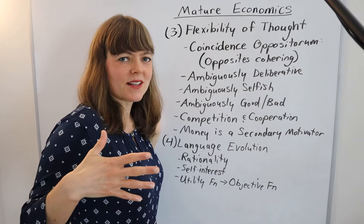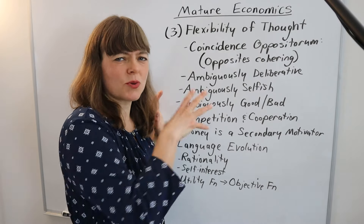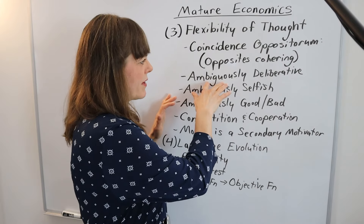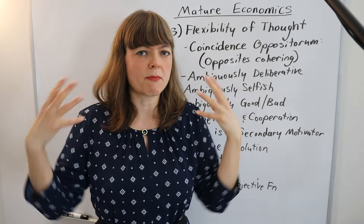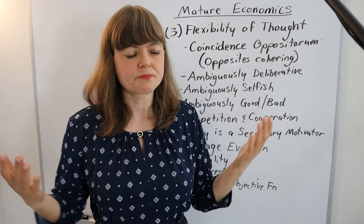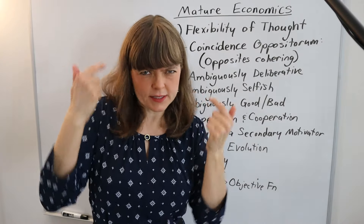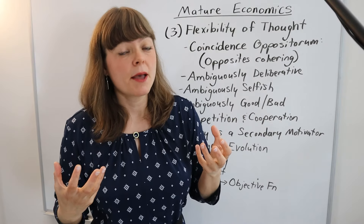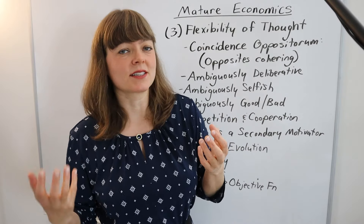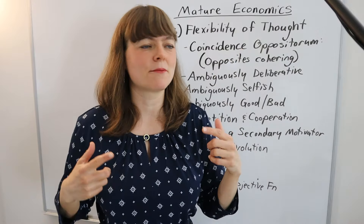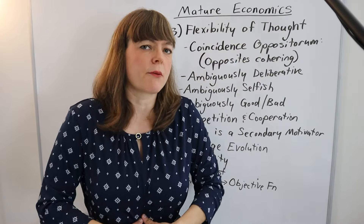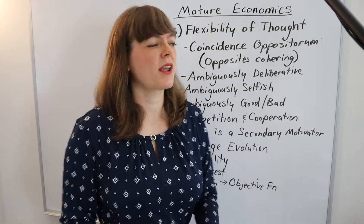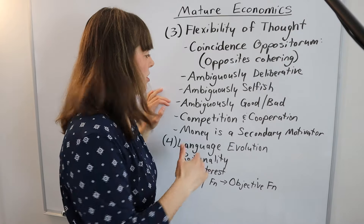Here are some categories I'll do separate videos on in the series. The first is ambiguously deliberative — when you're watching somebody make a decision in the real world, are they deliberately thinking it through? You want to ask: when are they being deliberative and when are they not? Maybe at one point in time it was deliberative, but now it's built into their nervous system. A lot of decision-making comes from the gut rather than the brain, and yet the gut is informed by the brain. So think ambiguously about deliberative versus non-deliberative.